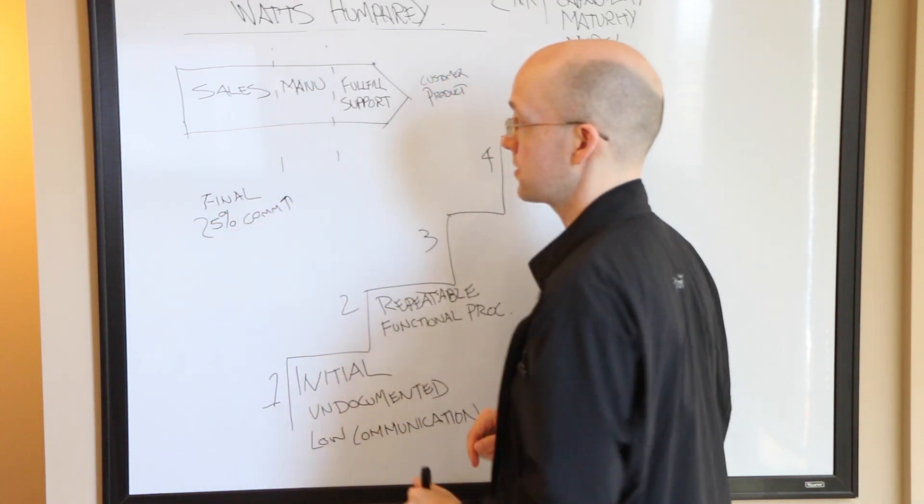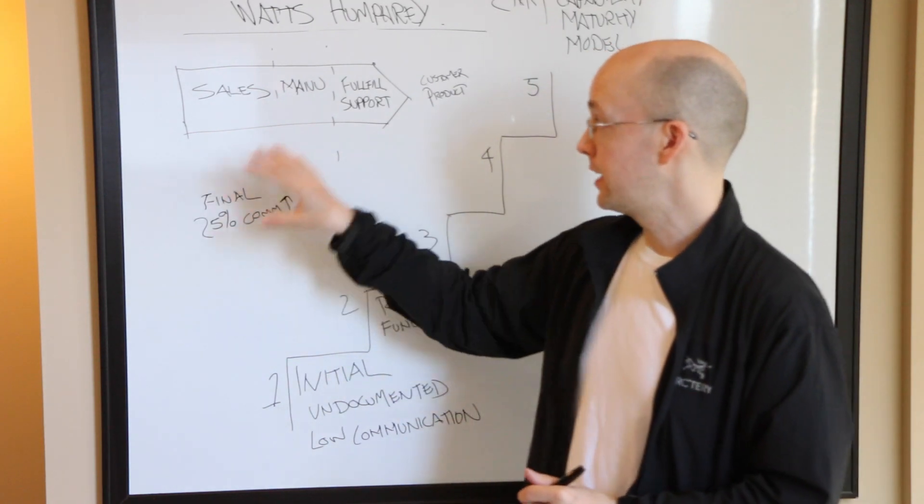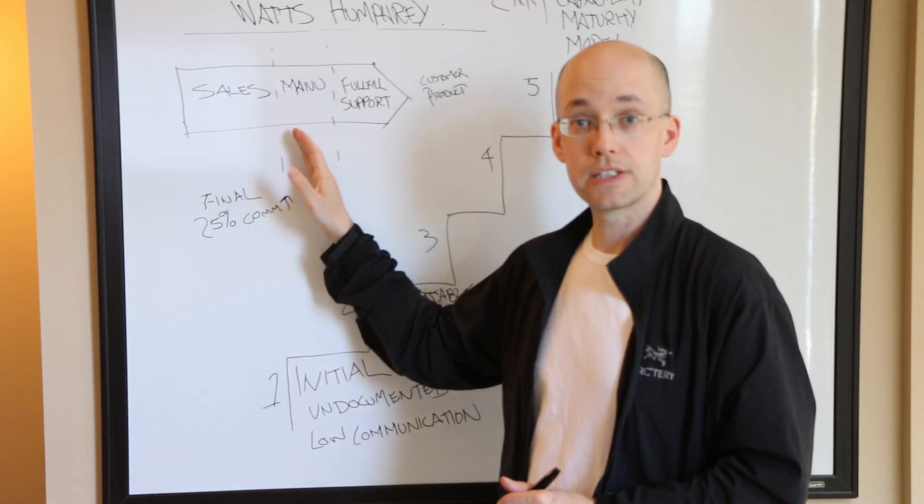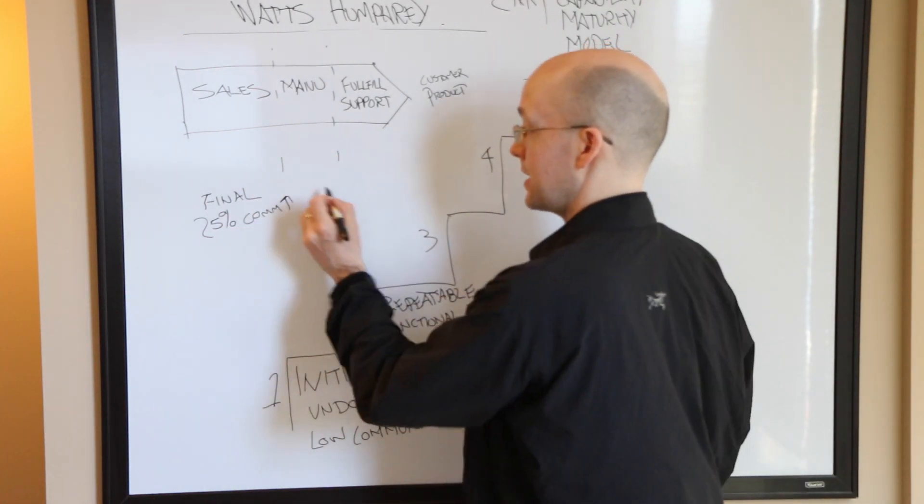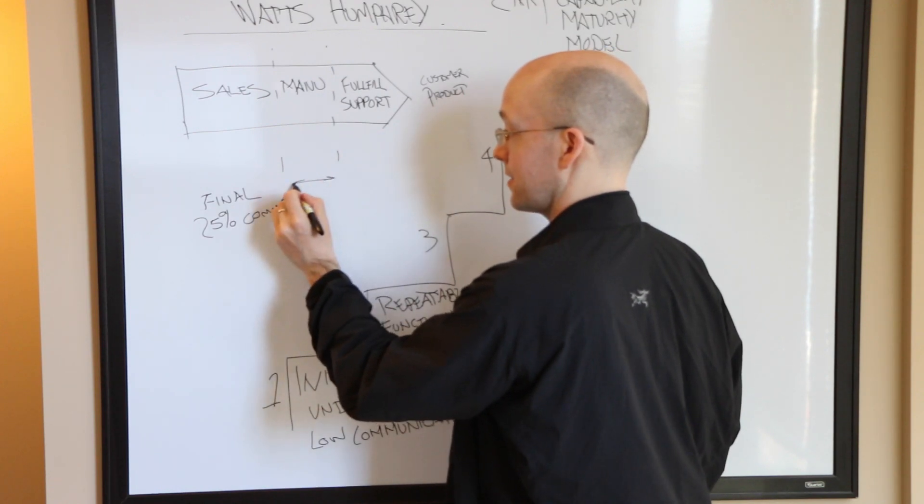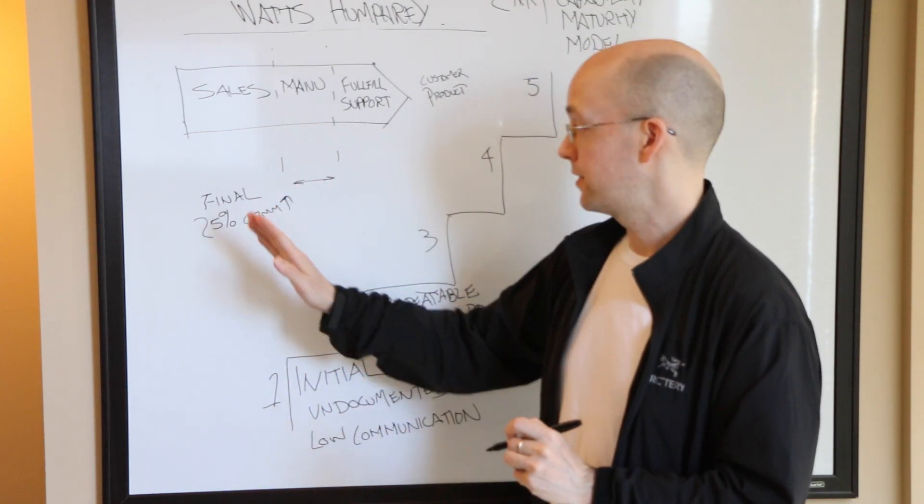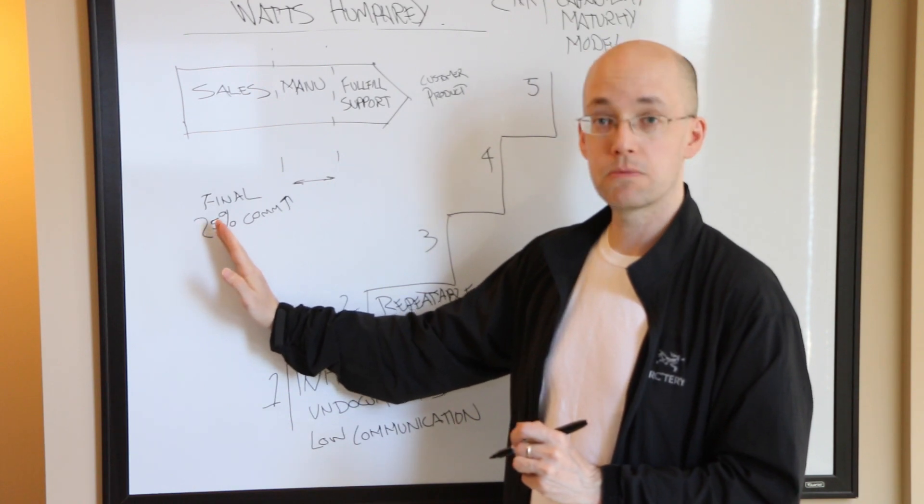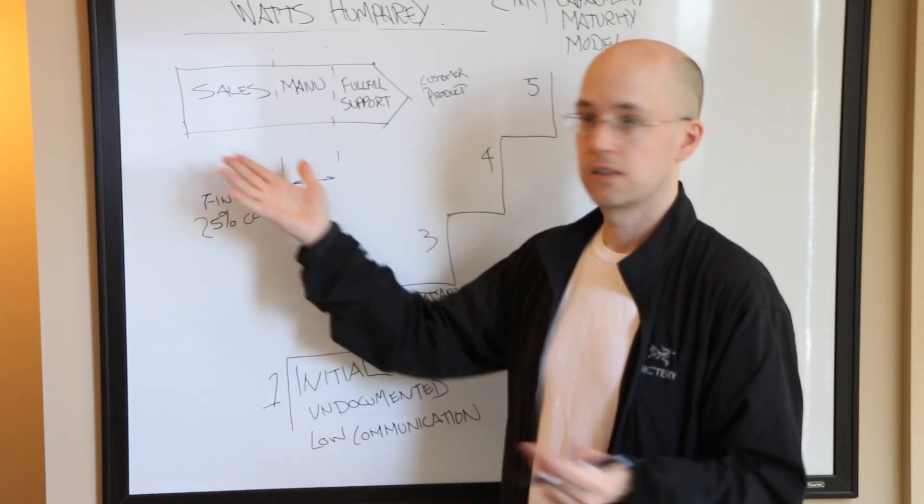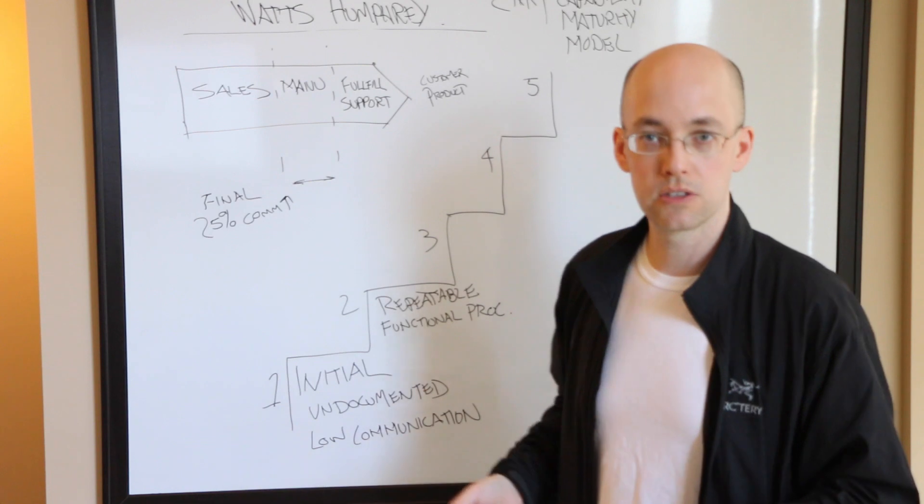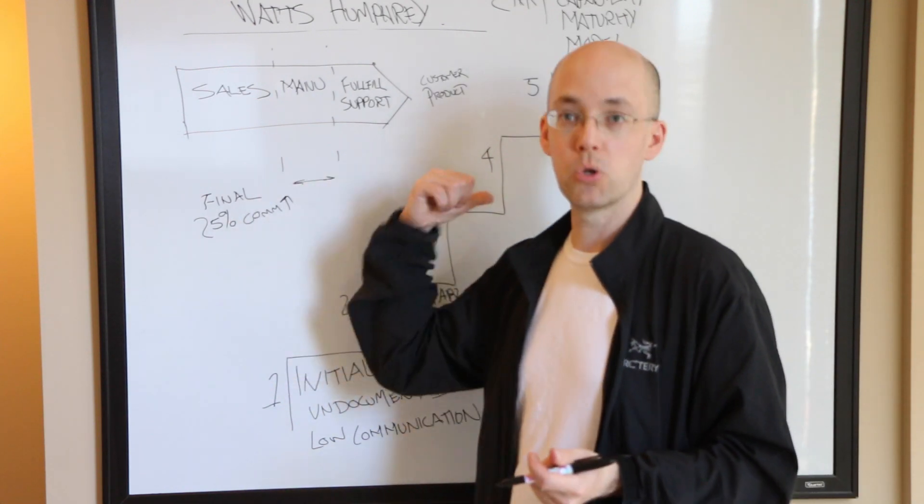So 25% commission is up. Now the goal of manufacturing is to maintain a consistent level of production. But sales says we're going to give a 25% commission for orders at the end of the week. The sales person is going to sit on the orders until the end of the week then push them through to get the 25% increase in commission.